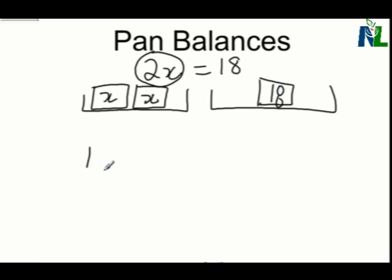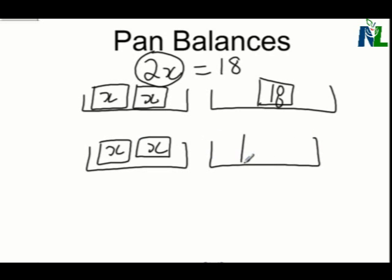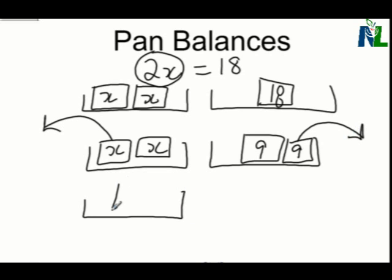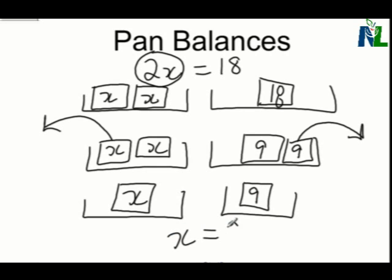Now if we want to know how much 1x is, what we're going to have to do is we're going to have to break up that 18 on the right pan into 2 weights the same size. So they're both going to be 9. If we take out an x on the left, we must take out a weight of the same size on the right, which is a 9. And then our balances will be x on the left and 9 on the right. So we have x equals 9.